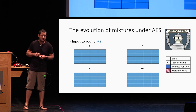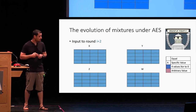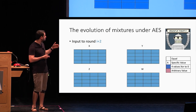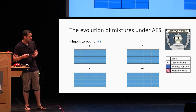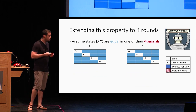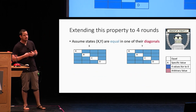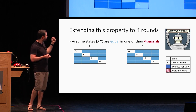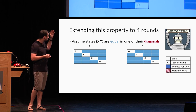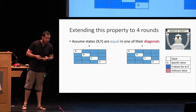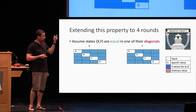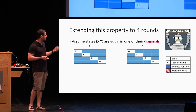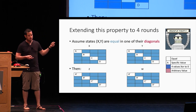At round I+2 we have this XOR-zero property, and now we make an additional assumption: by some chance we encounter the situation where the diagonal of X is equal to the diagonal of Y. This happens with probability 2^-32. But if the diagonal of X equals the diagonal of Y, and the sum of all four values is zero, this also implies that the diagonal of Z is equal to the diagonal of W.